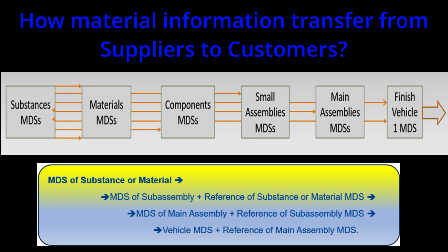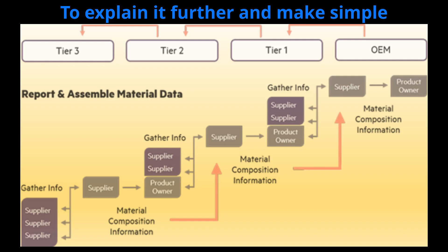How is material information transferred from suppliers to customers? Obviously through MDS. Substance MDS are made and referred to in material MDS. Material MDS are referred to in component MDS. Component MDS are referred to in sub-assembly MDS. Sub-assembly MDS are referred to in main assembly MDS. Finally, main assembly MDS are referred to in the finished vehicle MDS. Please refer to the sketch below, which shows how MDS flows from Tier 3 suppliers to the OEM and how an MDS tree is formed.